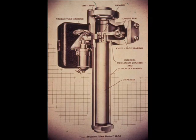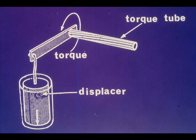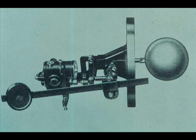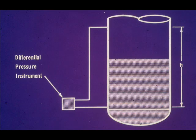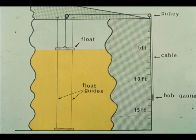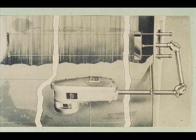We talked about the use of a displacer for measuring level, and how the changing weight of the displacer applied a changing twist or torque to the torque tube. We covered the ball float, and the use of differential pressure instruments to measure level. The use of the very simple bob gauge was covered, along with the more complex varic instrument, which can both measure and transmit level information.